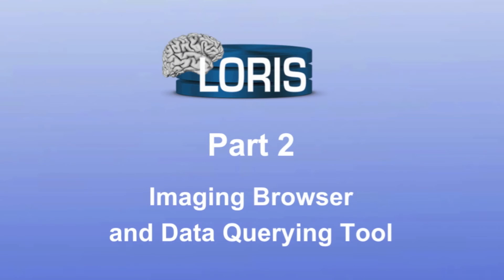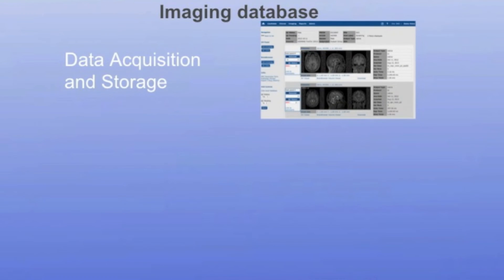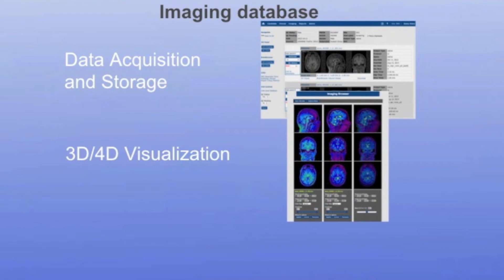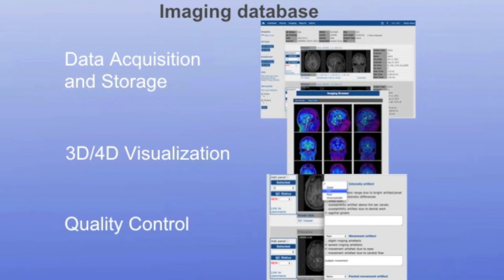This brings us to the imaging side of the database. LORUS was originally built as a neuroimaging database for MRI data acquisition, and has been developed and extended over time to handle numerous imaging modalities and formats, including three-dimensional and four-dimensional data sets. The imaging browser has three important functions: storing and organizing imaging data, visualization, and quality control.